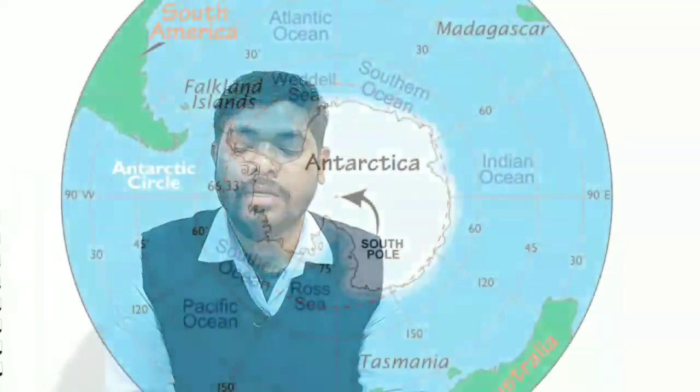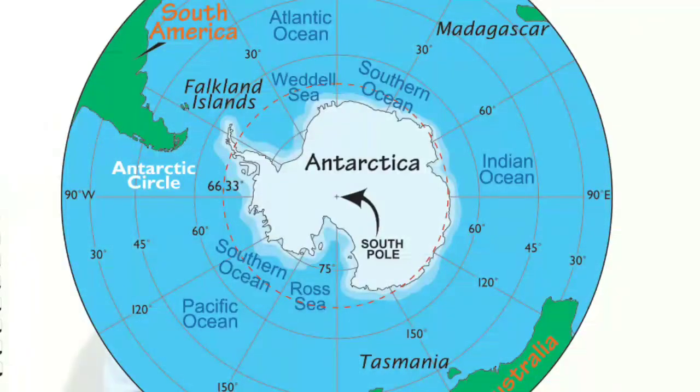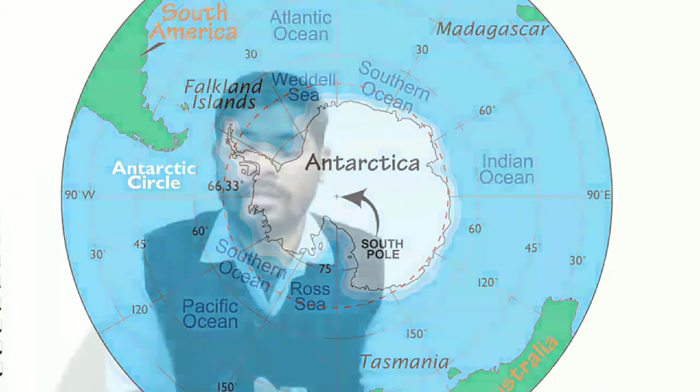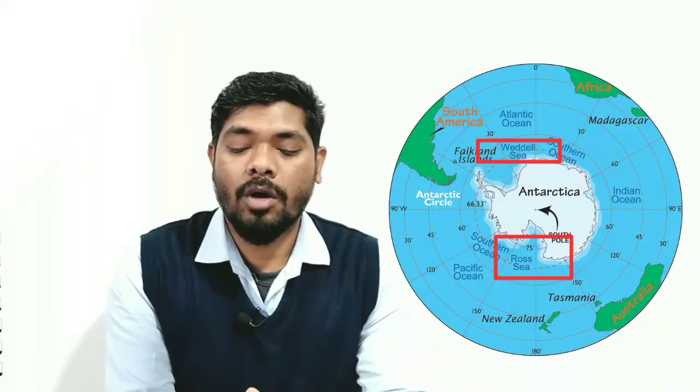Now let's discuss the boundaries of Antarctica. Antarctica is surrounded by various seas of three oceans of the world: the Pacific Ocean, the Atlantic Ocean, and the Indian Ocean. The Weddell Sea and the Ross Sea deeply penetrate the continent from opposite directions.